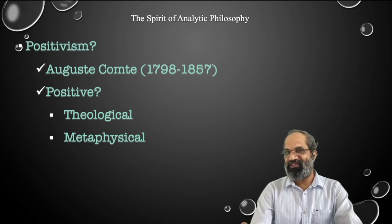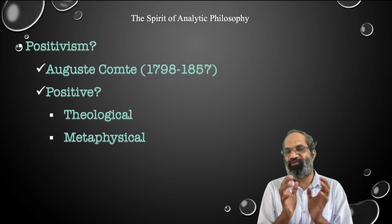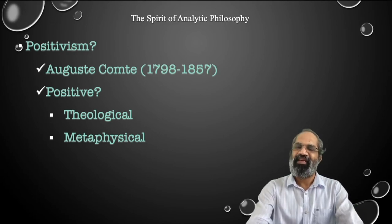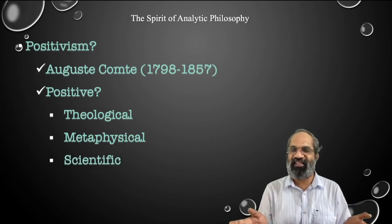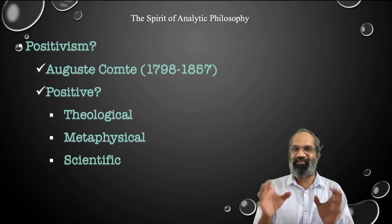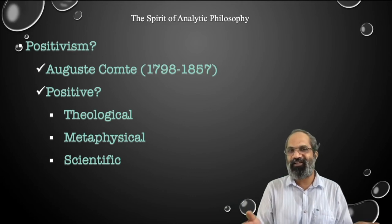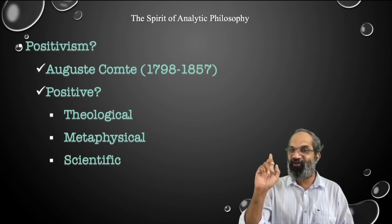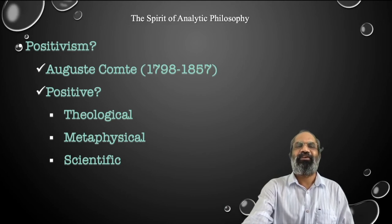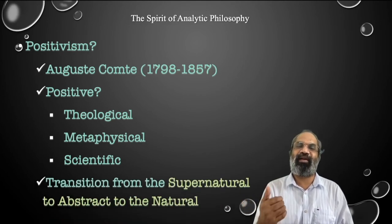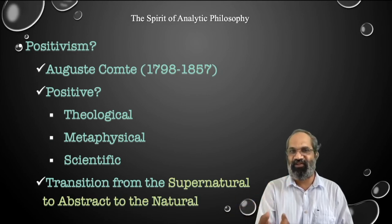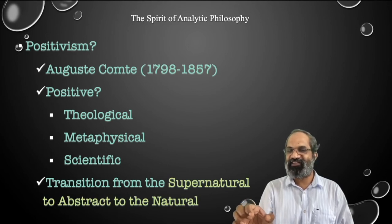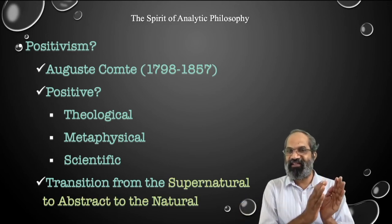Thales and Anaximander explained everything in terms of metaphysical principles — that is the second stage. At the third level, we have scientific or naturalistic explanation: for anything to be explained, there must be a causal connection between what you observe and what exists in the world. There is no supernatural power creating phenomena — every phenomenon is created out of nature itself. So there is a transition from supernatural, to abstract metaphysical, to natural scientific explanation.